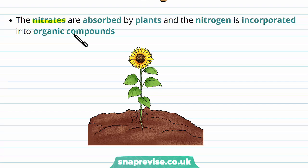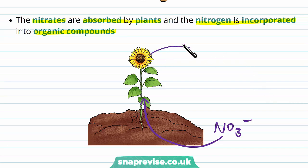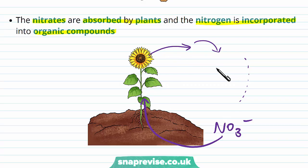The nitrates that get released in nitrification are absorbed by the plants, and the nitrogen is incorporated into organic compounds. The nitrate that's made can be absorbed through the roots into the plant, and it can be made into proteins and nucleic acids or whatever the plant needs. The cycle could go around again because if the plant dies or gets eaten, or the animal dies, the whole process will replace this nitrate back to the soil and it will keep going round and round.